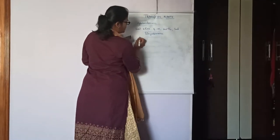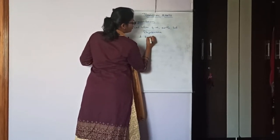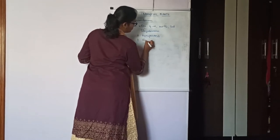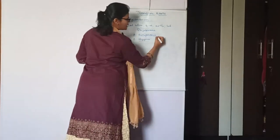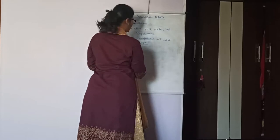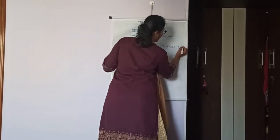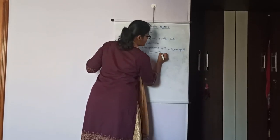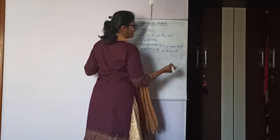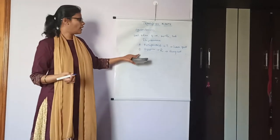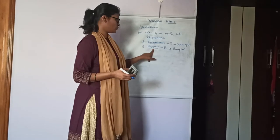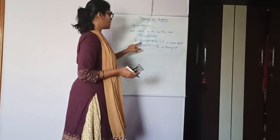Two types of Agrobacterium have been identified in the transformation process: Agrobacterium tumefaciens and Agrobacterium rhizogenes. Agrobacterium tumefaciens carries Ti-plasmid, that is tumor-inducing plasmid, and it causes the disease called crown gall disease in plants. Agrobacterium rhizogenes carries Ri-plasmid, which is root-inducing, and it causes hairy root disease in plants. Agrobacterium tumefaciens is commonly used compared to rhizogenes, because rhizogenes is used only for the production of secondary metabolites.